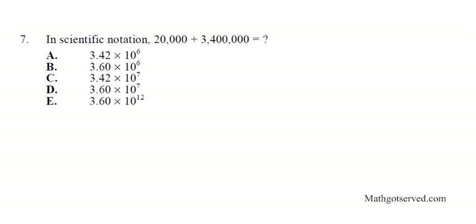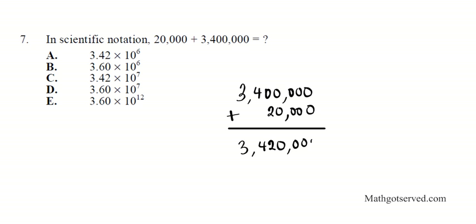Let's move on to question number 7. It says in scientific notation, what is $20,000 plus $3.4 million? We're going to add them first and then we're going to convert the result to scientific notation. So let's put the bigger number on top, $3.4 million. And then we're going to add $20,000 to that. So if we execute that summation, we're going to have $3,420,000.